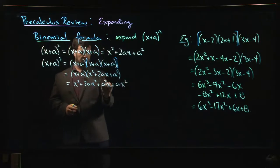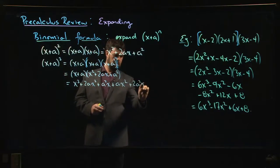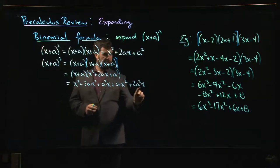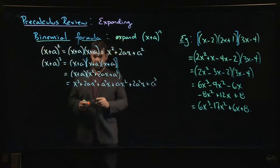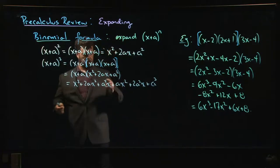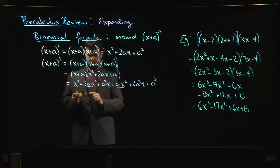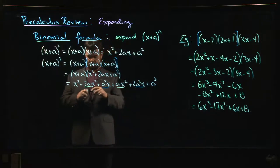a times a² gives you a³, and then you want to group like terms. There are two degree-two terms and two degree-one terms, so you want to put those together.